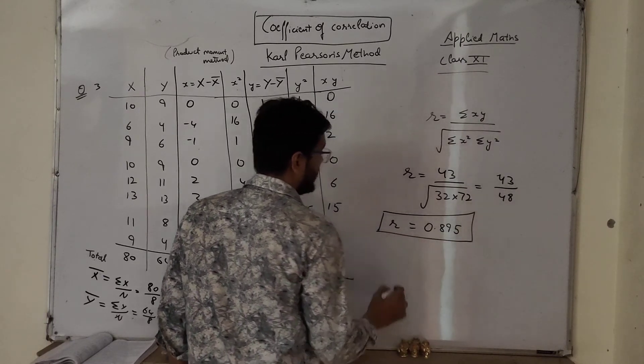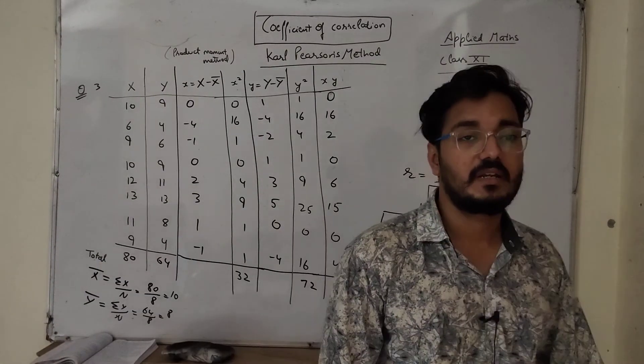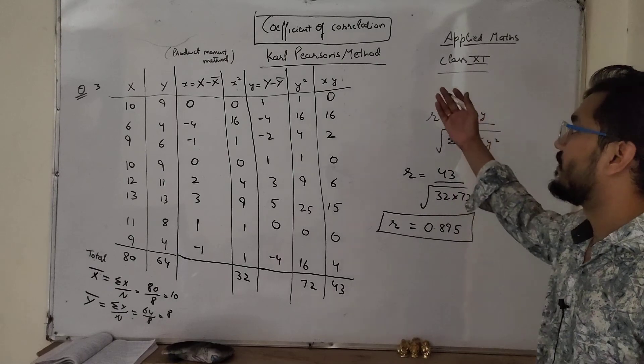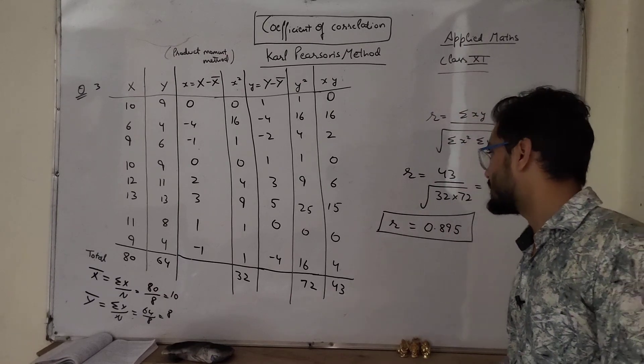Coefficient of correlation is 0.895, yes it is the correct answer. So this is how you can easily determine Carl Pearson coefficient of correlation, very easy method. Based on this method, the questions from your textbook are question number 6, 11, 14, 15.